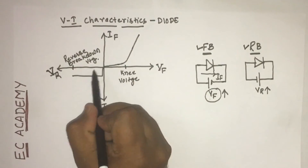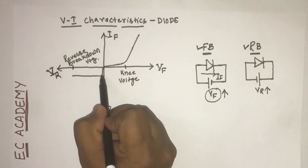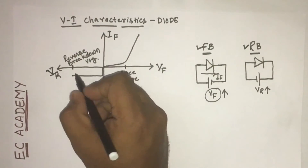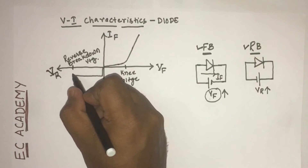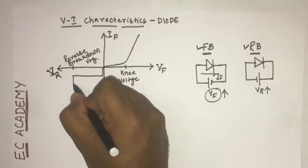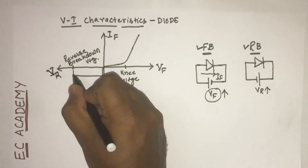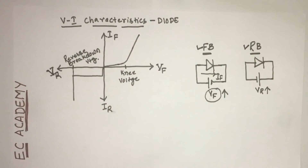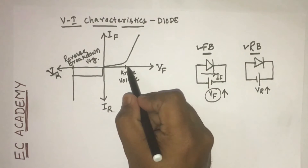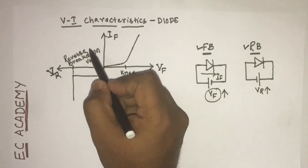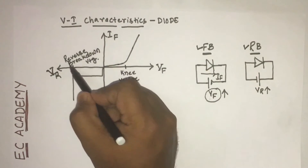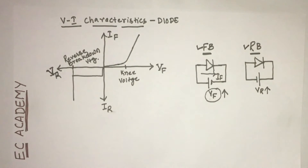Once the applied reverse voltage reaches reverse breakdown voltage, the junction breakdown occurs and the current increases instantaneously. Here we have understood two parameters: the first parameter is the knee voltage and the second parameter is the reverse breakdown voltage.